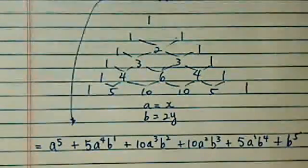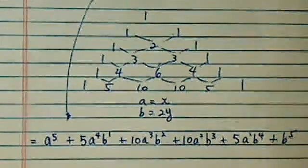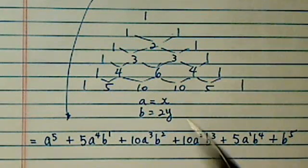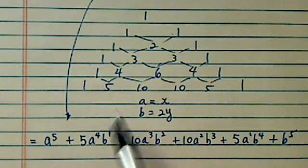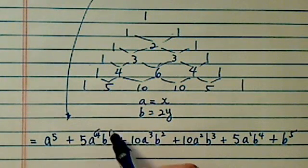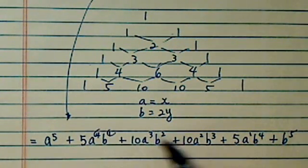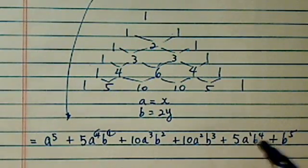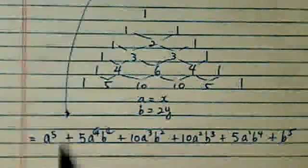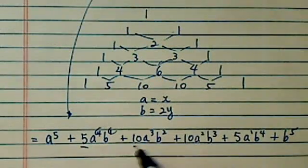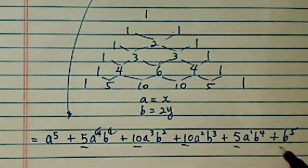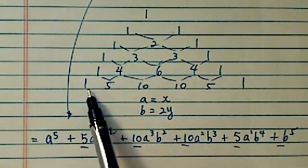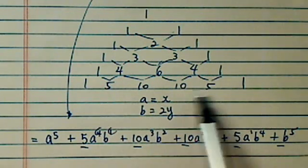Let's double check, because if this step is wrong, everything else falls apart. Adding the exponents: each term sums to 5 — good. And the coefficients are 1, 5, 10, 10, 5, 1. Everything looks good.